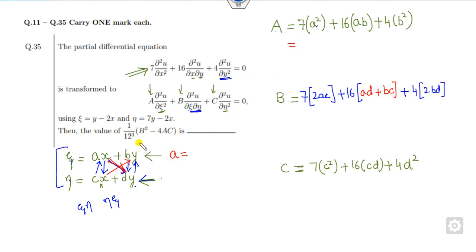What is a? If you compare this coefficient, a is -2, b is 1. What is the value of c? c is -2 and d is 7. So I can substitute this value here. a² that is 7 into 4 + 16ab is -2, b is 1. So what is that? This is 28 - 32 + 4. Answer is 0.